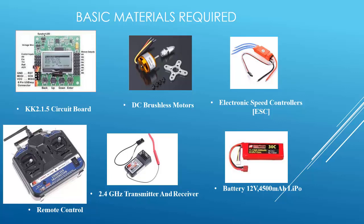Here you can see the KK2.1.5 circuit board. We will also use brushless motors because they spin at thousands of rotations per kilovolt. Here is the Electronic Speed Controller, which is also called the ESC, which controls the motor speed. This is the remote controller — the transmitter and receiver work at 2.4 gigahertz — and the battery is a 12-volt 4500 mAh LiPo.